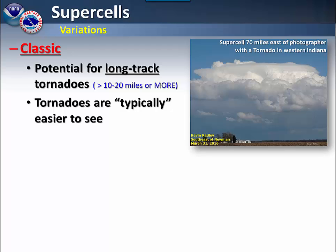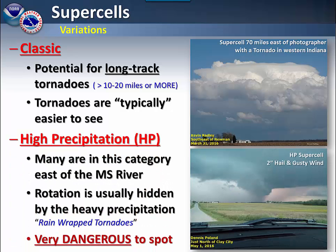There are two types of supercells. The first is referred to as a classic supercell. These have the potential for long track tornadoes that stretch for at least 10 miles or so, and they are typically easier to see. The type you'll be more likely to see around here is referred to as a high precipitation supercell, where the rotation is hidden by heavy rain. These are very dangerous to spot.